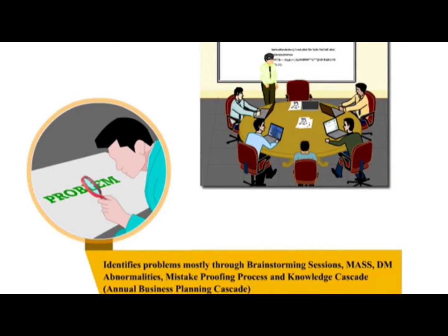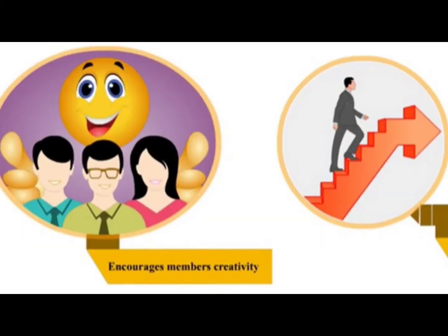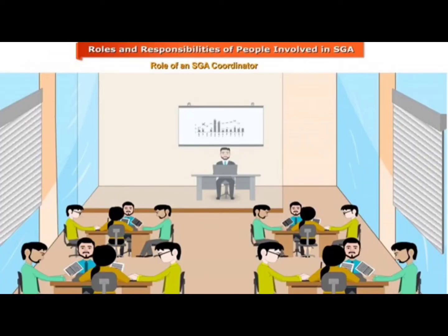Moving to some topics of quality circle. Quality circle identifies problems mostly through brainstorming sessions, or mass or DM abnormalities, or mistake proofing processes, or knowledge cascade like some sort of annual business planning cascade. Through all these combined, we identify a problem. It also utilizes quality control concepts and techniques to solve problems, encourages members' creativity, and promotes self and mutual development.